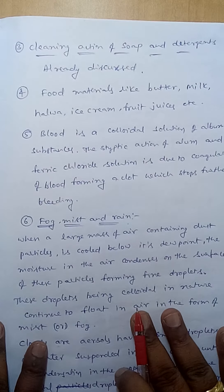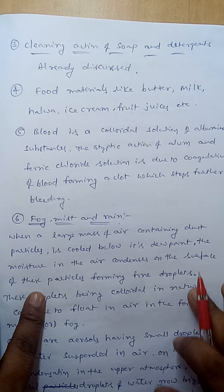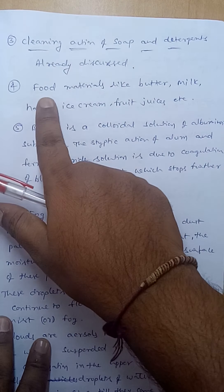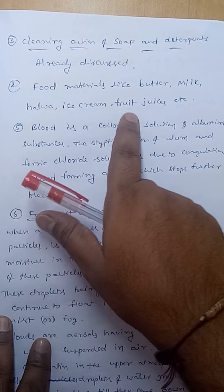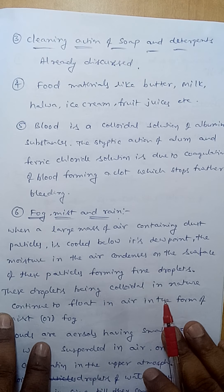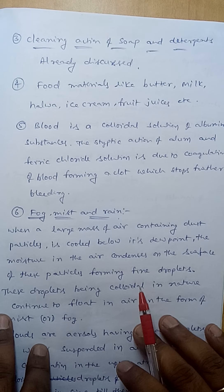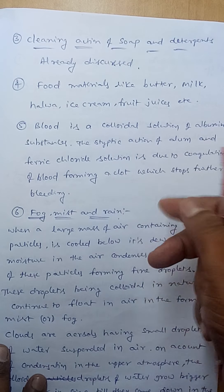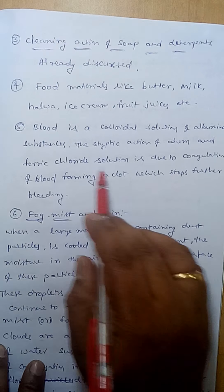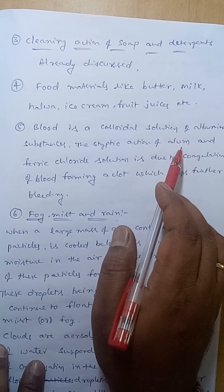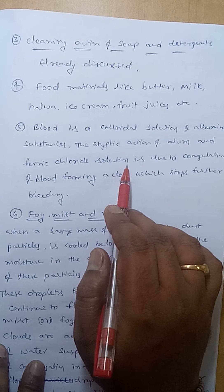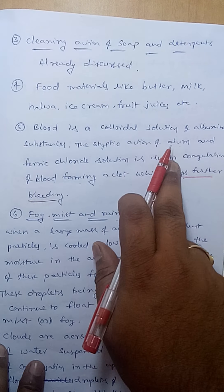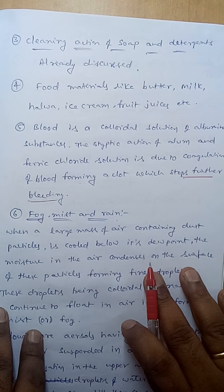The cleaning action of soaps and detergents was already discussed in the formation of micelles. Food materials like butter, milk, halwa, ice cream, and fruit juices are all colloidal solutions — not true solutions, as they are not clear. Blood is a colloidal solution of albuminoid substances; the styptic action of alum and ferric chloride is due to coagulation of blood, forming a clot which stops further bleeding.